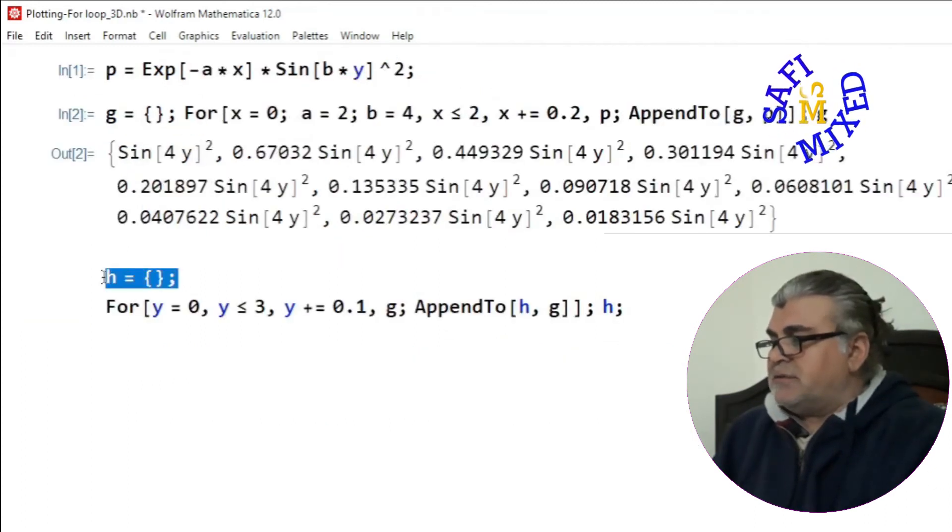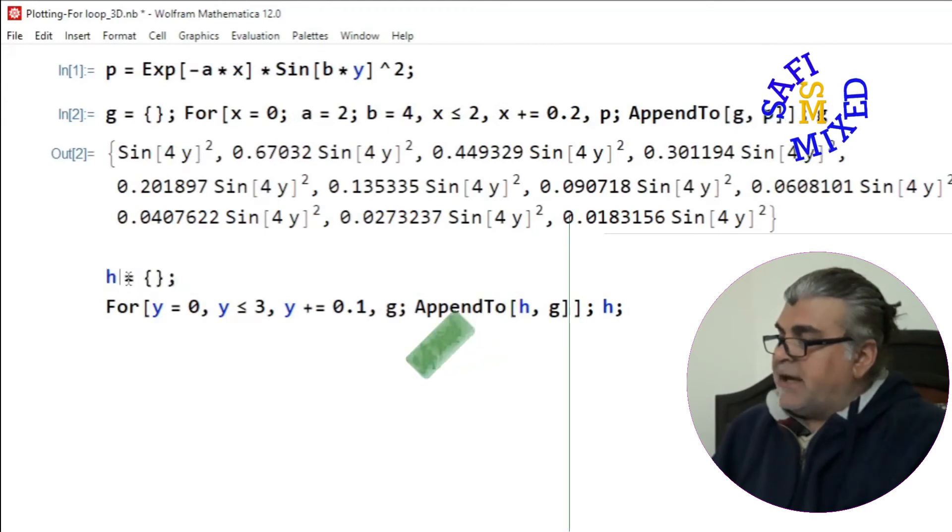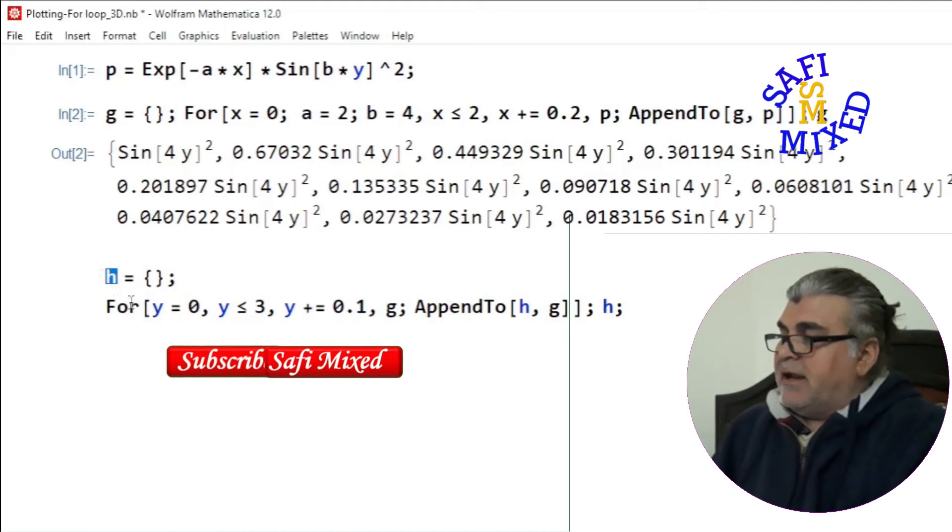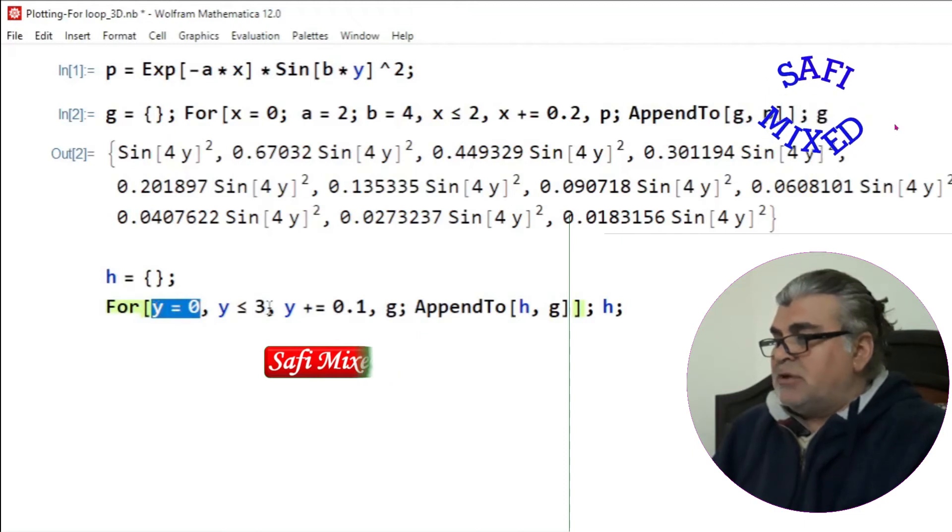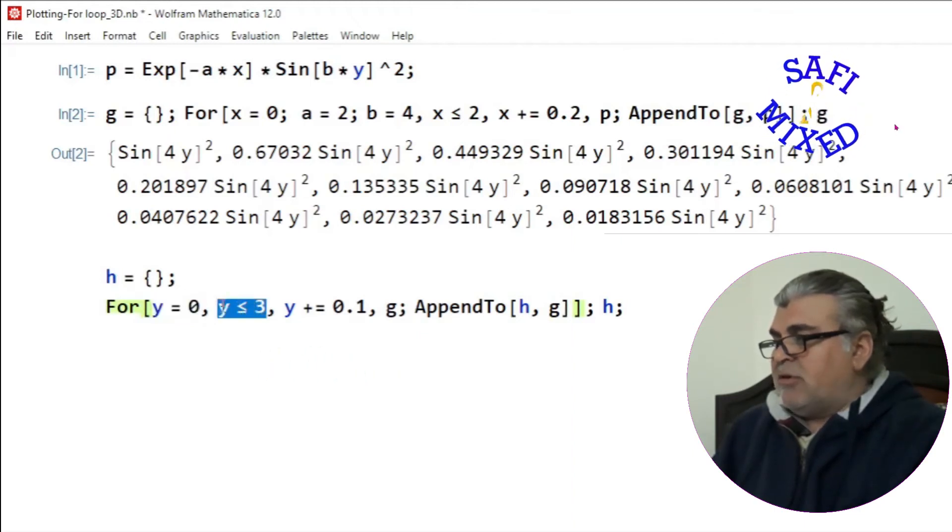For this purpose, I generate another empty list which I assign to h, and generate another for loop for which I start the value of y from 0 and the maximum value of y I'm taking here to be 3.